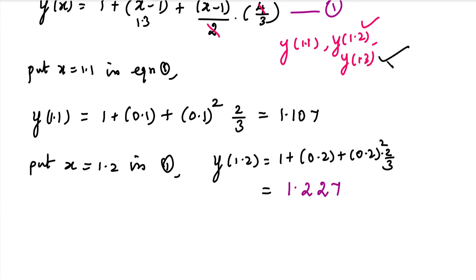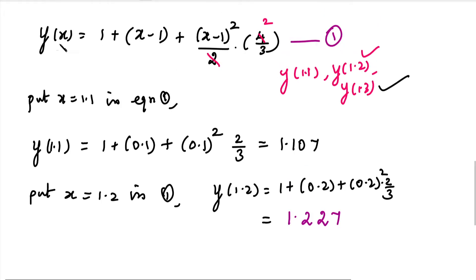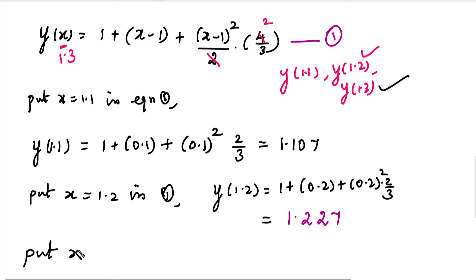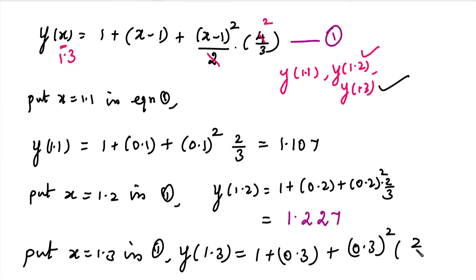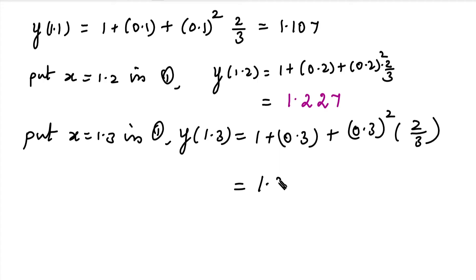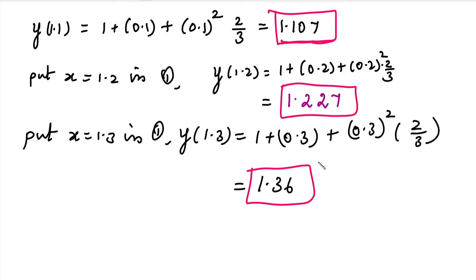For y(1.3): substituting x = 1.3 into equation 1, we get y(1.3) = 1 + (0.3) + (0.3)²·(2/3). Simplifying this gives approximately 1.360. These are the three approximate values using the Taylor series method.